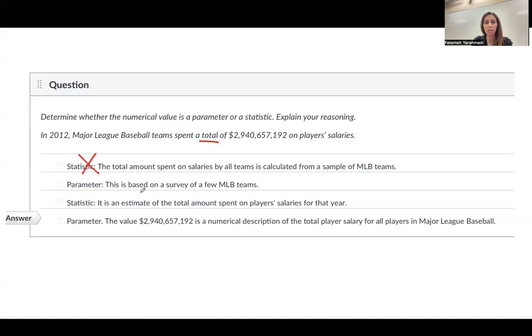The parameter, this is based on a survey. When we see the survey, the survey is all about sample, not about population. Statistic, it's an estimate of the total. Again, we have total. So, total is always about population. And then, parameter is the value of about $3 trillion in numerical description of the total player's salary. This is the correct answer.